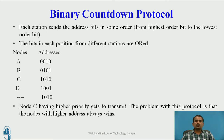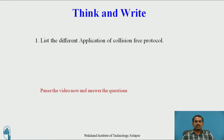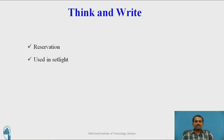After transmitting C, we move to the next higher priority and follow the same procedure for transmitting. The problem with this protocol is that the nodes with the highest address always win. This is the reflection spot. The reflection spot contains one question: list the different applications of collision-free protocol. Please pause the video and answer the question. The application of the bitmap collision-free protocol — where we use reservation — is used in satellite communication.